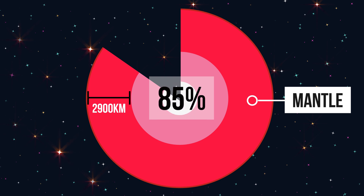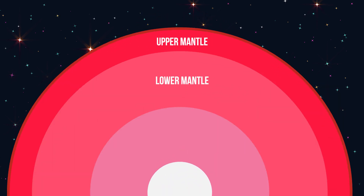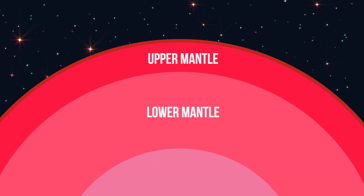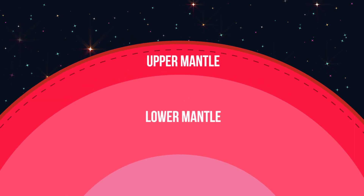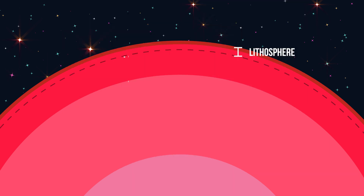The mantle is about 2,900 kilometers thick, which makes it the thickest layer of Earth, also making up 85 percent of the Earth's total weight. This again can be split into two distinct layers: the upper and lower mantle. The outer part of the upper mantle is like the crust but much cooler and rigid. The crust and outer upper mantle together are called the lithosphere, which is broken into large pieces that make up Earth's tectonic plates.